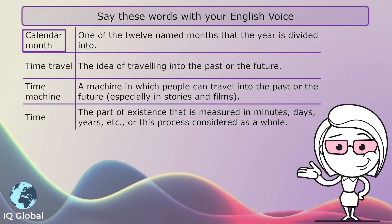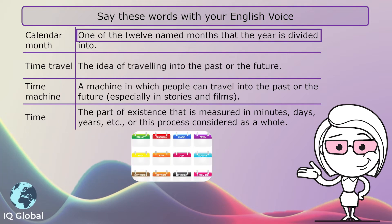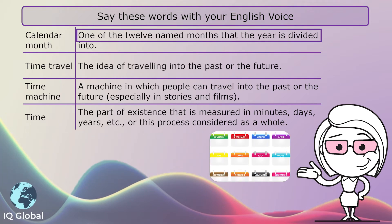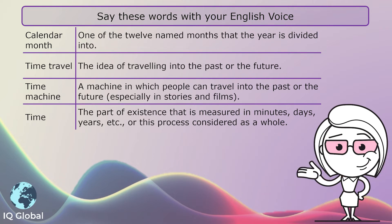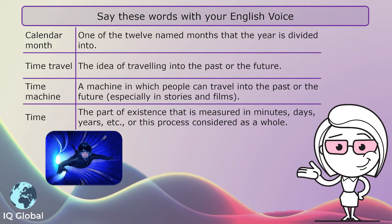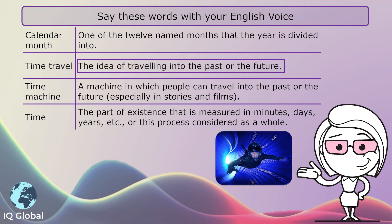Calendar month: one of the 12 named months that the year is divided into. For example, April. Time travel: the idea of travelling into the past or the future.